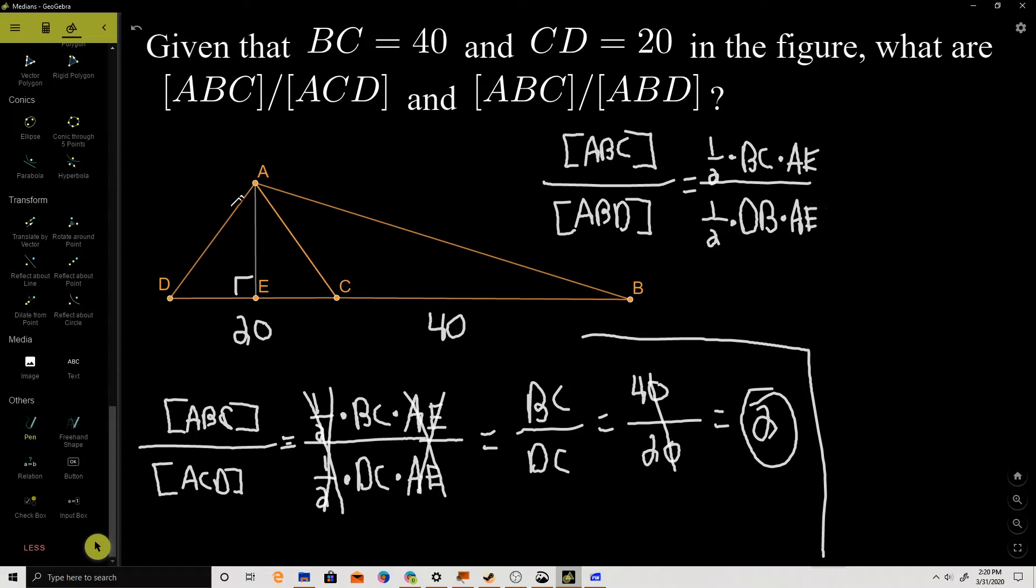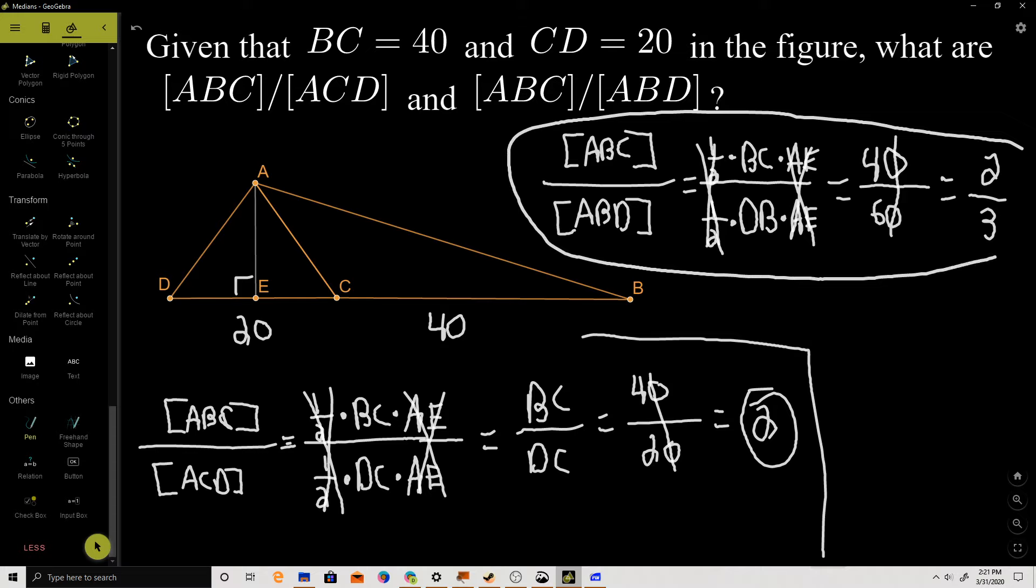These ratios are very useful, especially when you have this common base and common heights. We do our crossing out and simplifications just like before. The one-halfs cancel out, and the AE over AE cancels out, and we're left with BC over DB. BC is 40, and DB is the entire length, so it's 20 plus 40, which is 60. That reduces to 4 over 6, which reduces further to 2 over 3.